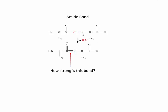First of all, it's a really important bond — it's the bond that holds amino acids together in proteins. Here's one amino acid with the R group, the amino group, and the carboxyl group, and here's another amino acid. These two can come together and form a link between this C double bond O and this N, with the elimination of water, to form this amide link. Specifically, this C–N bond is the link that really holds the two amino acids together.